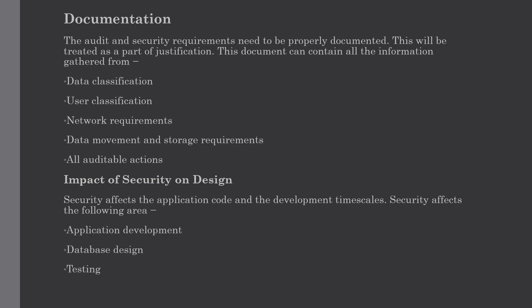The load manager may require checking code to filter records and place them in different locations, and more transformation rules may be required for hiding certain data. There may also be a requirement for extra metadata to handle extra objects. The warehouse manager may require extra code to enforce security and create and maintain extra views. Extra checks may need to be coded to prevent data from being moved to a location where it should not be available. The query manager will require changes to handle any access restrictions and will need to be aware of all extra views and different aggregations applied on top of it.